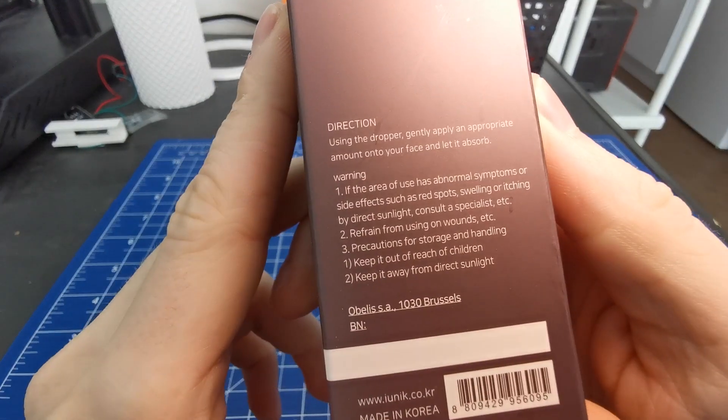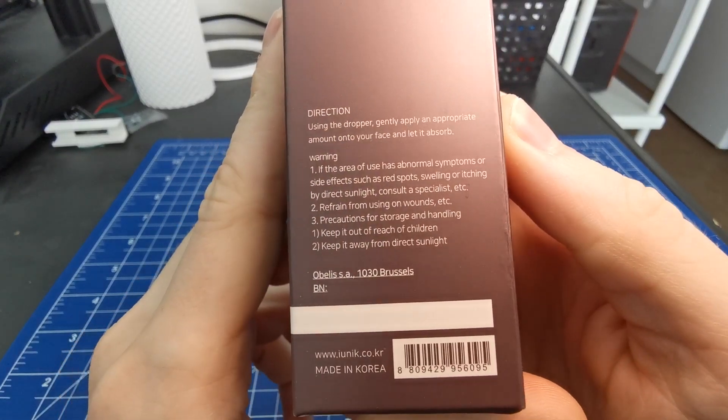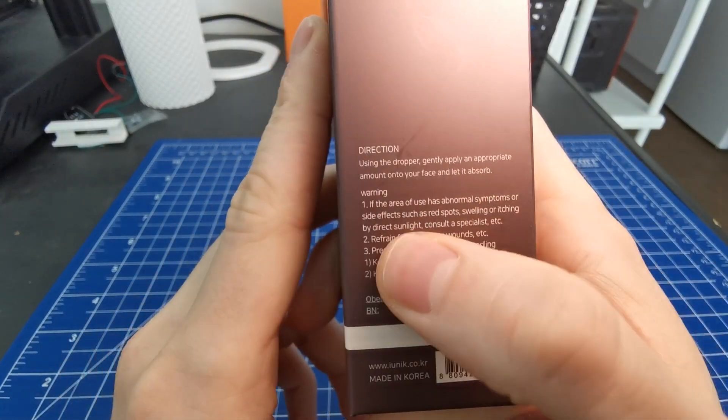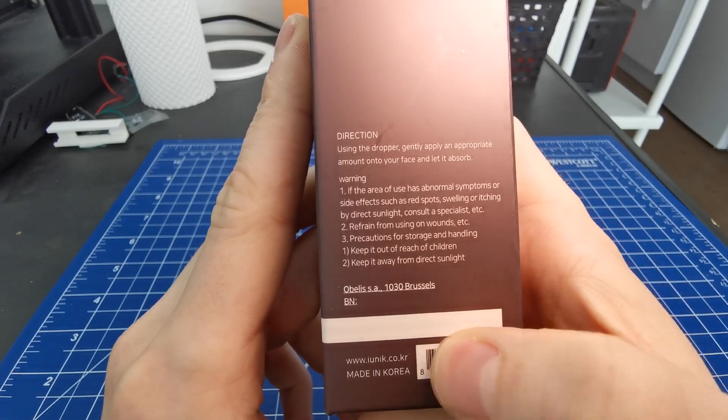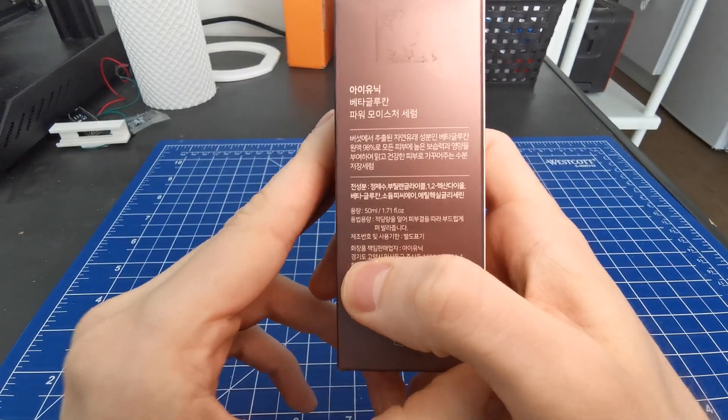The Beta-glucan serum is an ultra-moisturizer ingredient that helps with nurturing the skin and strengthening the skin protective layers, and it's suitable for every skin type.